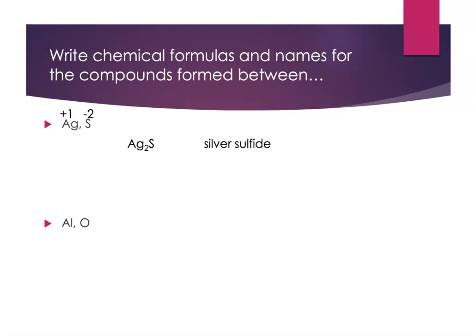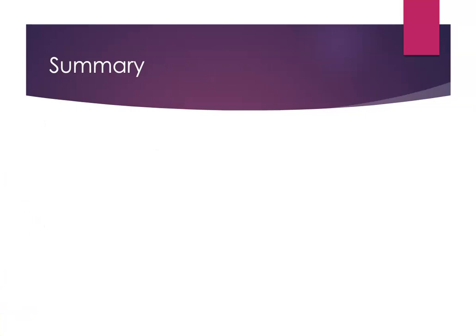Final example: aluminum and oxygen. Aluminum has a +3 charge; oxide is −2. The lowest common multiple is 6, so two aluminums give +6 and three oxides give −6 — that's neutral. The compound is Al₂O₃, and the name is aluminum oxide. Keep practicing these skills until you can do it comfortably, reliably, and accurately, because you'll build on this as we get into more involved compounds.